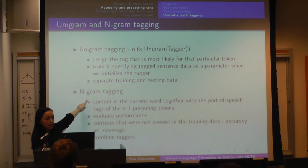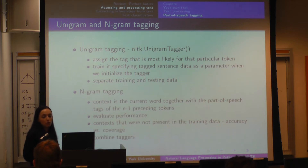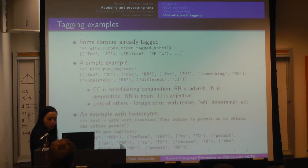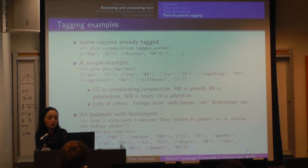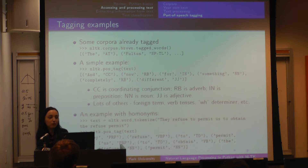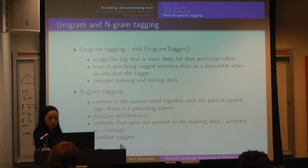However, n-gram tagging does take the context into account. And why is it n? Because you're taking the n-1 previous tokens into consideration when you are deciding whether something is a noun or a verb. For example, in the case of distinguishing between verbs and nouns, it was probably using bigram tagging, because bigram tagging in this situation would be enough — one of them has a word in front of it and the other does not. Usually bigram tagging works pretty well.